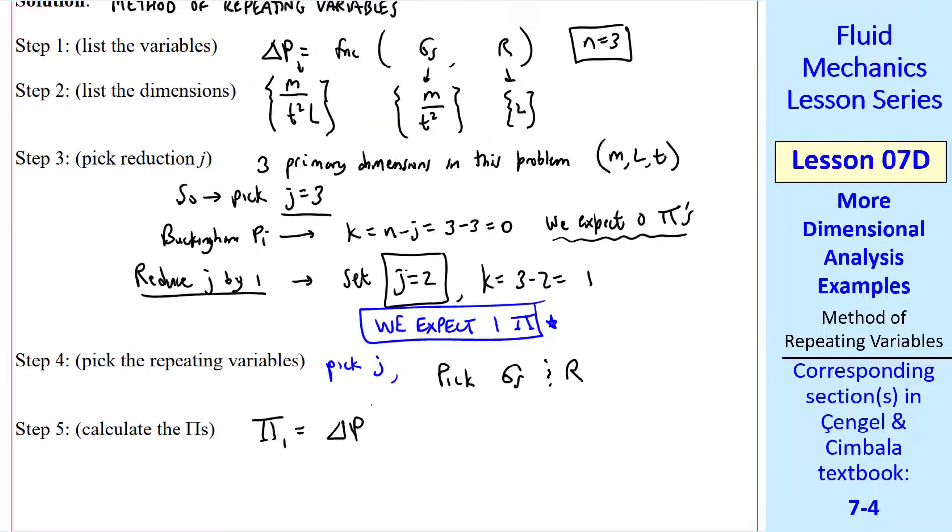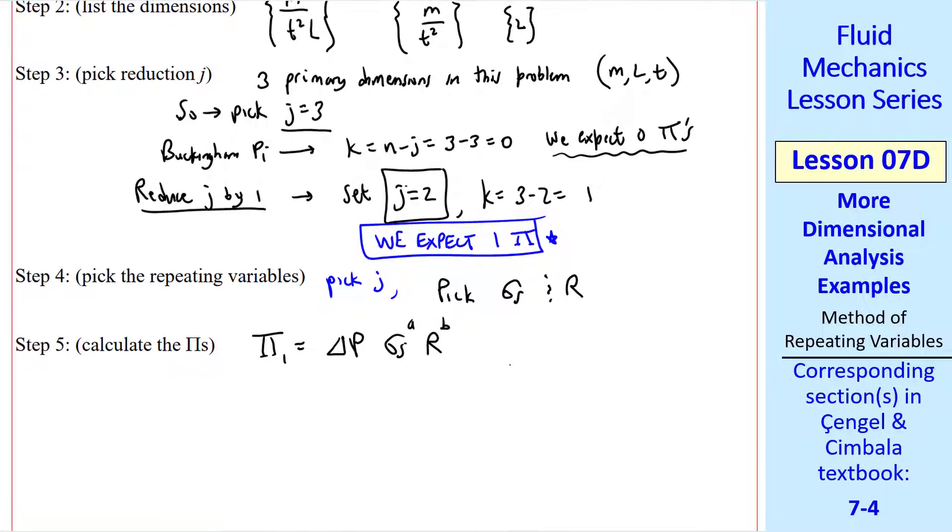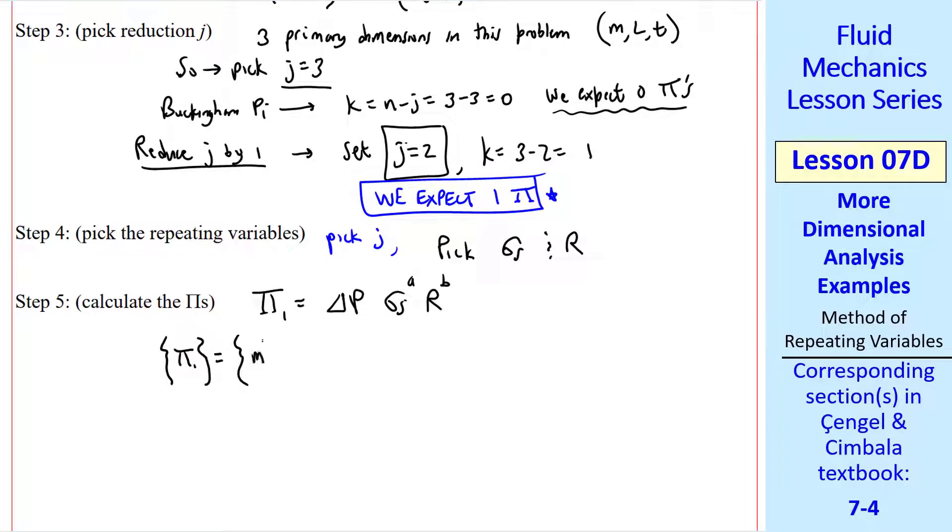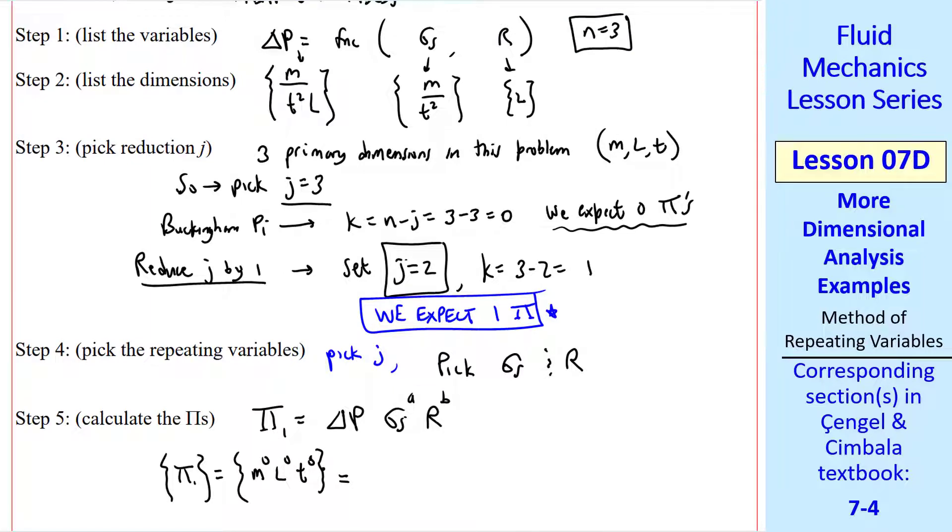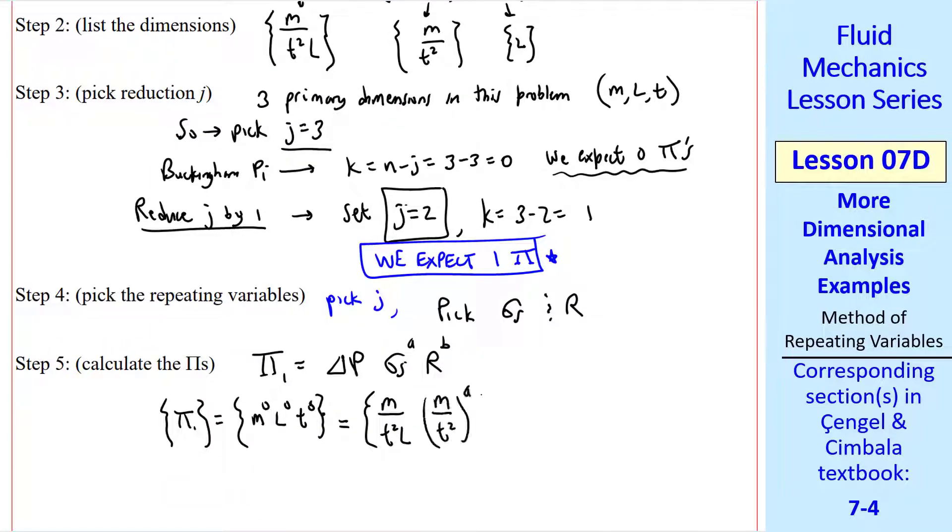Step 5 is to calculate the pi's. There's only one. We form it by picking our dependent variable, delta p, times the repeating variables raised to some exponents which we have to calculate. The dimensions of pi 1 are unity, or dimensionless, and we know the dimensions of each variable from step 2. We plug these in, delta p, sigma s raised to the a, and r raised to the b.